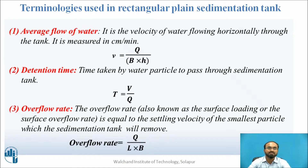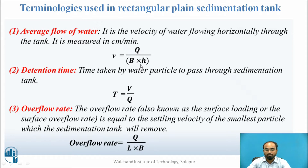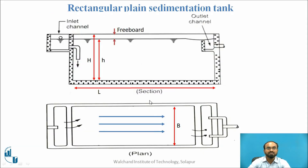The major focus is on three parameters. First is average flow of water — it is the velocity of water passing horizontally through the tank, measured in centimeters per minute. The formula is: small v equals capital Q (discharge) divided by breadth B into small h (effective height of water). This represents the cross-sectional area of the rectangular tank.